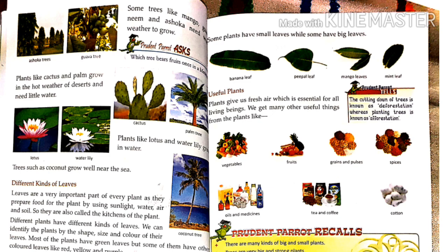Different plants have different kinds of leaves. We can identify plants by the size and color of their leaves. Most plants have green leaves, but some have other colored leaves like red, yellow, and purple.